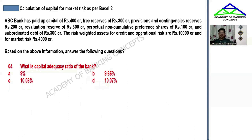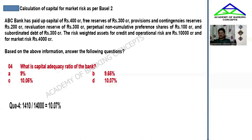Next, what is the Capital Adequacy Ratio (CAR) of the bank? CAR is capital as a proportion of total risk-weighted assets. Total capital (Tier 1 plus Tier 2) is 1,410. Total risk-weighted assets are 10,000 plus 4,000 equals 14,000. So the Capital Adequacy Ratio is 1,410 divided by 14,000, which comes to approximately 10.07%.